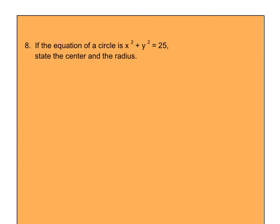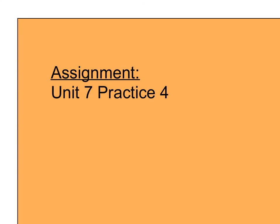Please pause the video and try this last one on your own. The center is (0, 0) — there's nothing behind the x and nothing behind the y. r squared is 25, so r equals 5. Will you give Unit 7 Practice 4 a try? If you need some help, let me know. Have a great day.